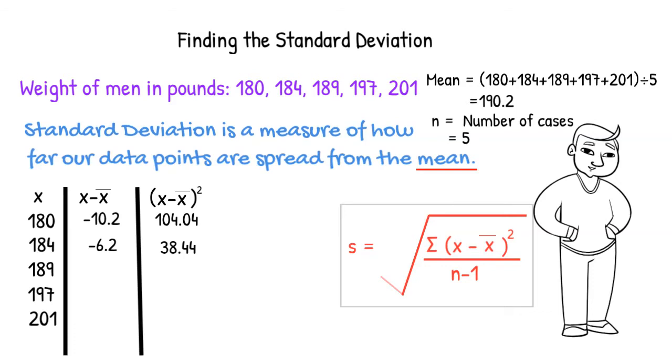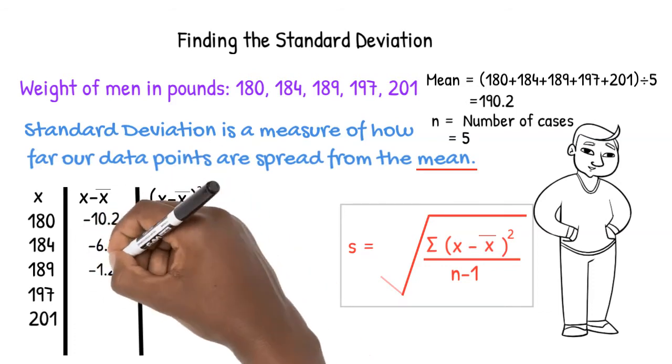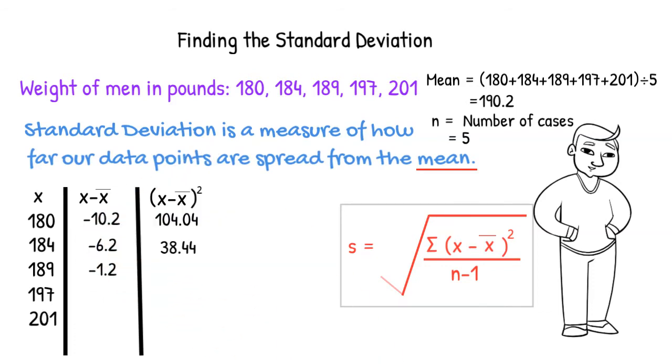189 minus 190.2 gives us negative 1.2. Negative 1.2 squared gives us 1.44.